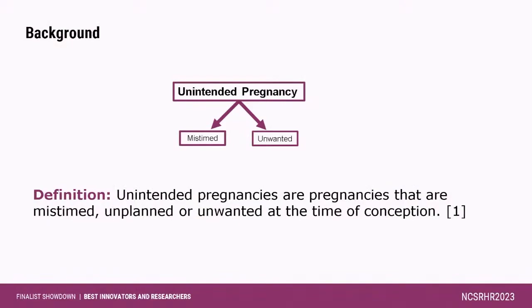First, we need to know what unintended pregnancy is. According to CDC, unintended pregnancies are pregnancies that are mistimed, unplanned, or unwanted at the time of conception. We can see that 48% of total world pregnancies are unintended, and 92% of unintended pregnancies in the world happen in LMICs. This figure stands around 5% in Asia, around 19% in South Asia, whereas it stands around 28% in Bangladesh.